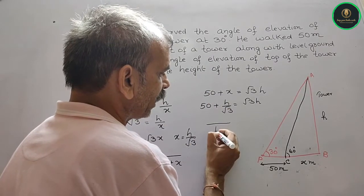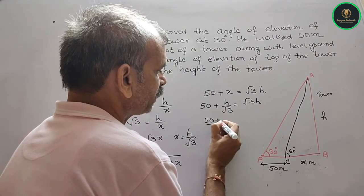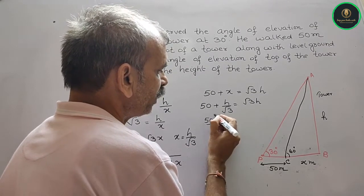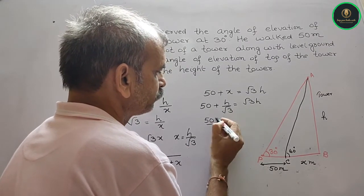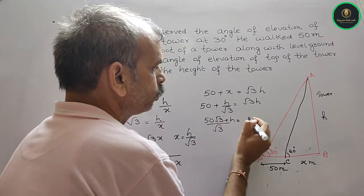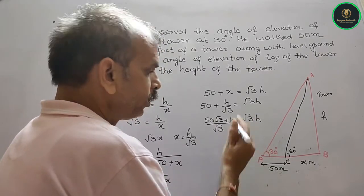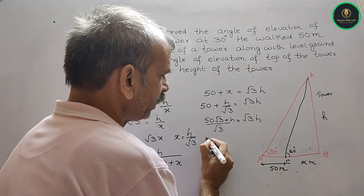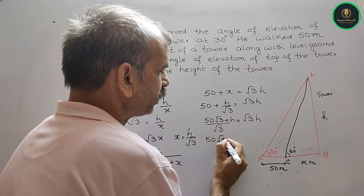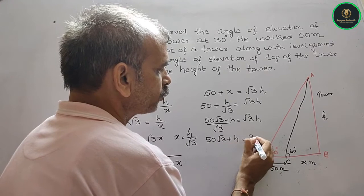√3 equals h. Now you have 50 plus h. So 50 plus x, 50√3 plus h equals √3h. Now cross multiply, so you have 50√3 plus h equals 3h.